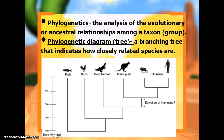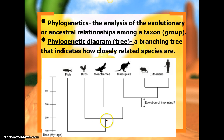A phylogenetic diagram or tree is a branching tree that shows how closely related species are. In this tree we see fish, birds, monotremes, marsupials, and eutherians, and we are looking at the relationship of them based on how they have evolved over time. This branch here evolved into birds, and then this grouping — monotremes, then marsupials, and then eutherians.